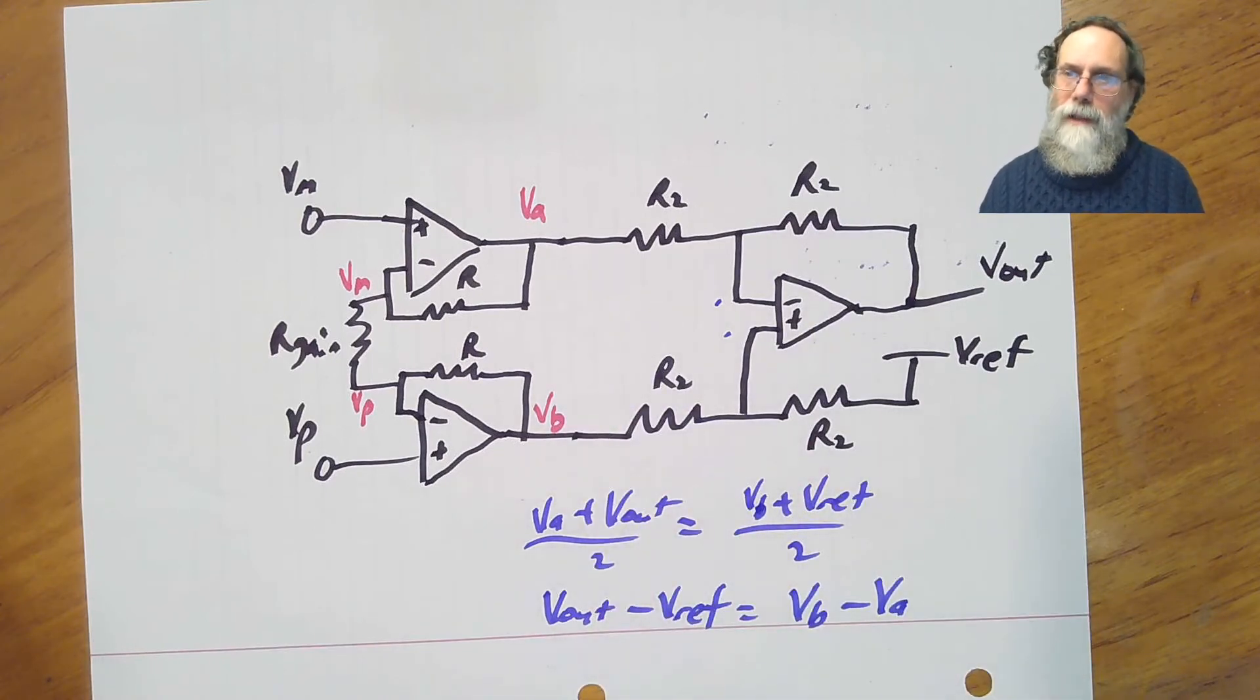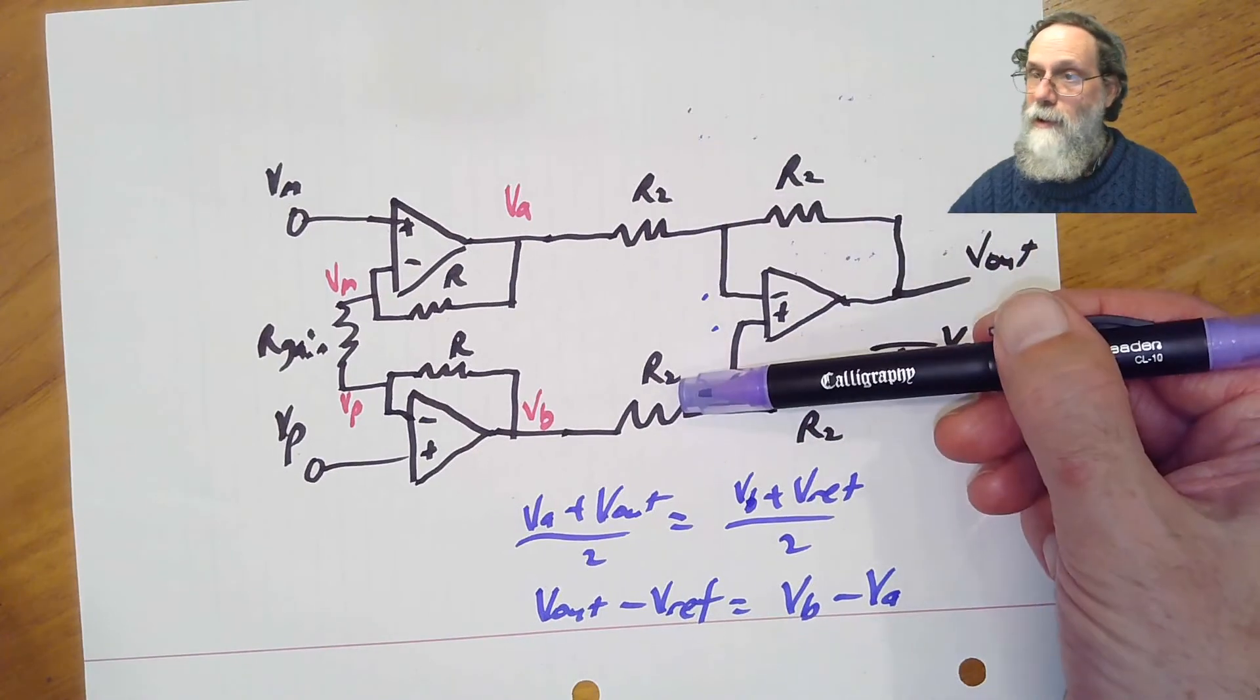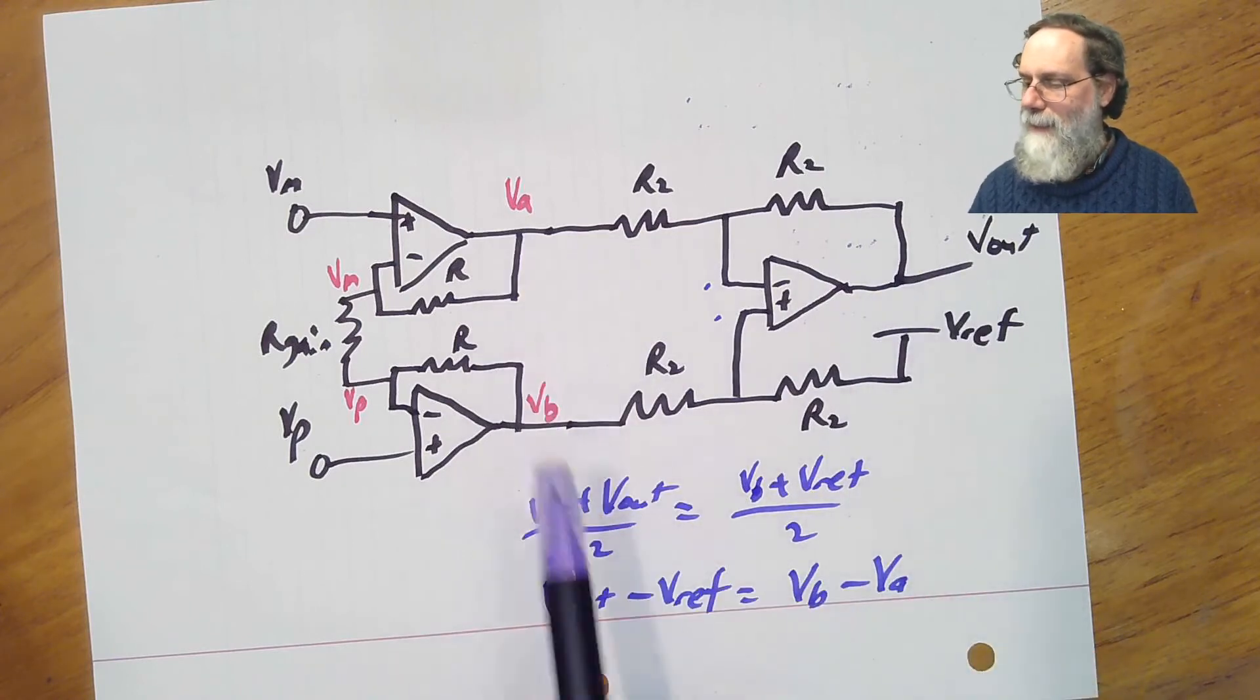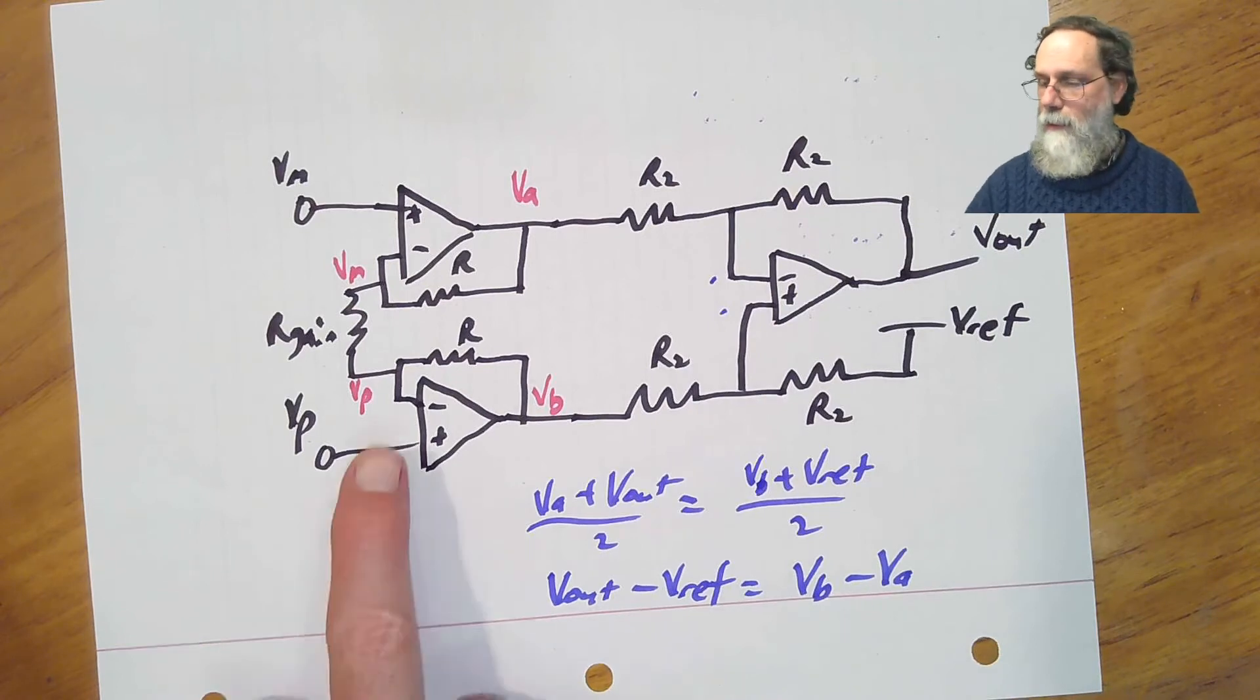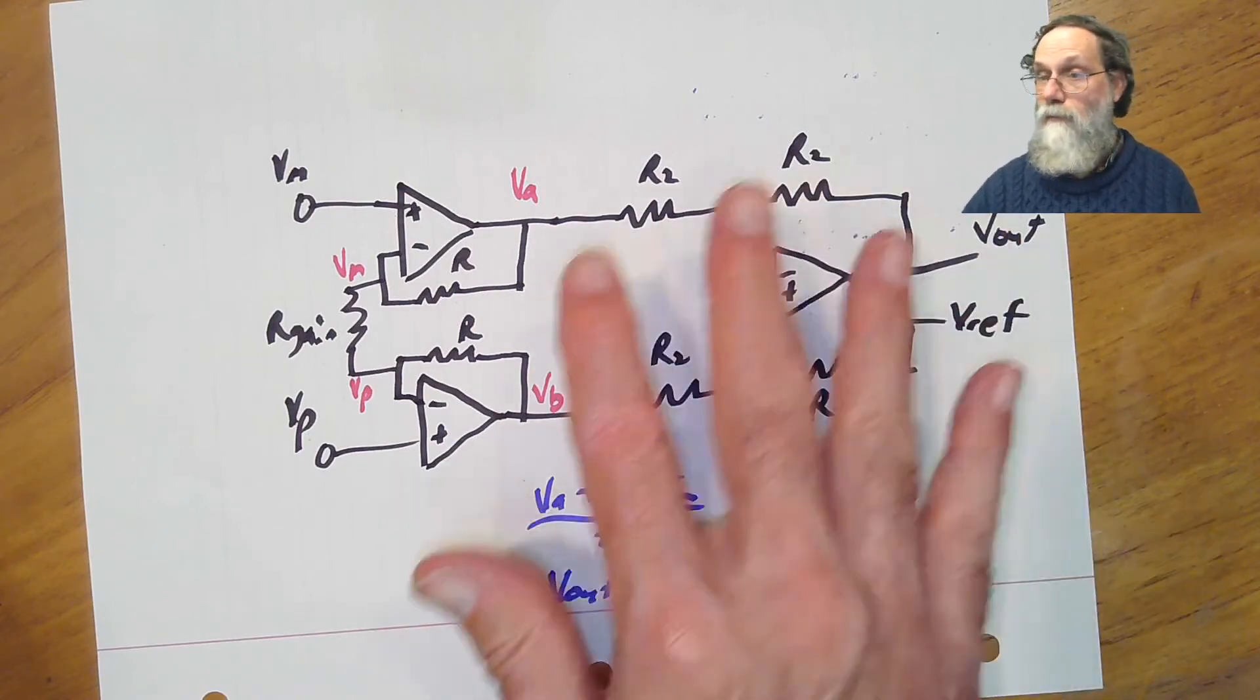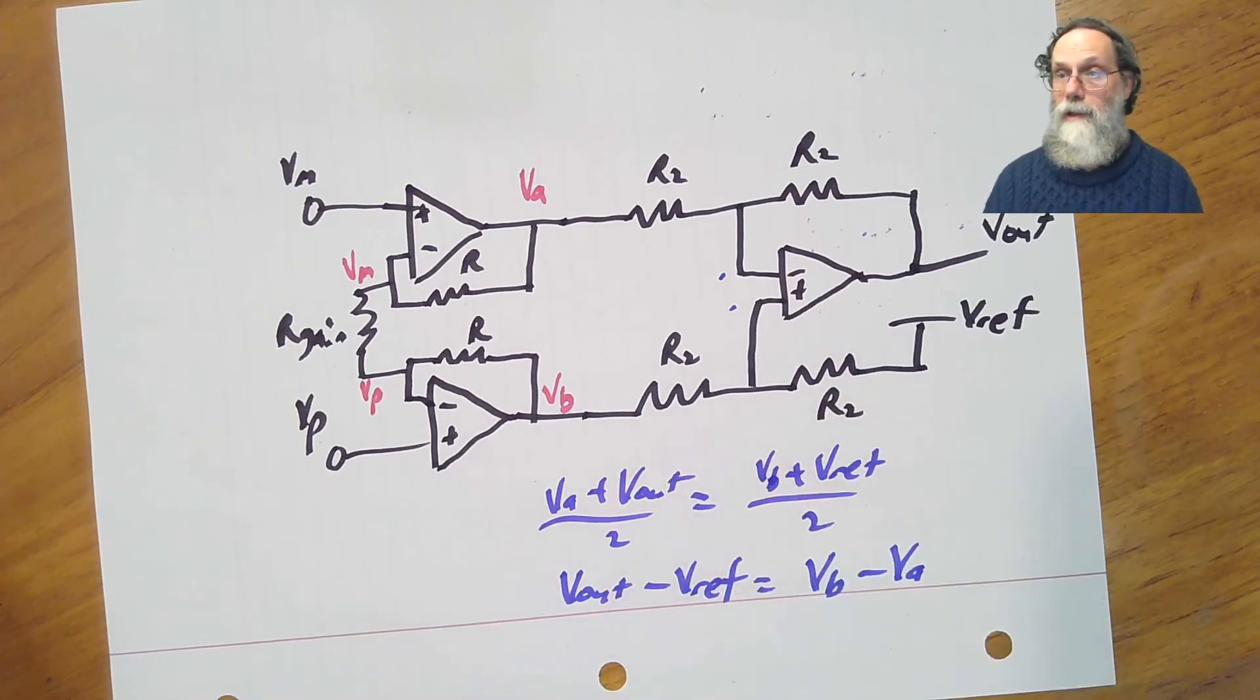You can, in fact, get gain in the second stage by making these two resistors the same, but larger than these two resistors. Then you can get a weighted average of Vout and Va being equal to the weighted average of Vref and Vb, and that weighting can come in as a gain term. But quite commonly it's done as a stage here which does not provide any gain with all the gain coming from the first stage, but that's something that is optional. You can, in fact, redesign this thing to make gain in both the first stage and the second stage.